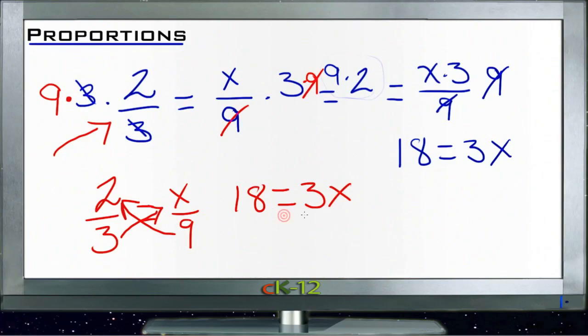And it doesn't matter which way you go. If you want to put 3x, do three times x and put 3x on the left, and nine times two on the other side, it doesn't matter at all. This statement just means is the same thing as. And if 18 is the same thing as 3x, then 3x is the same thing as 18. That just makes perfect sense, right?